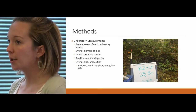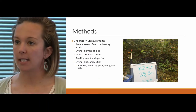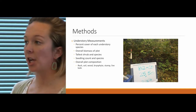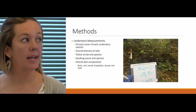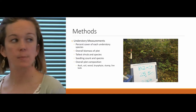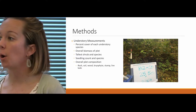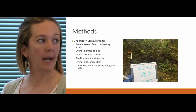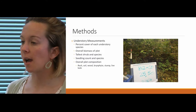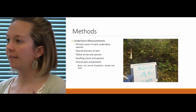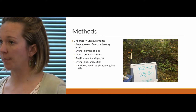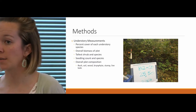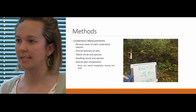In the 2016 field season, I collected all understory measurements with my crew. That included collecting percent cover of each understory species present, the overall biomass of the plots, the tallest shrub and its corresponding species, a seedling count and its corresponding species, and an overall plot composition broken down into categories including rock, soil, wood, bryophyte, stump, and live bowl. All understory plots are three by three meters. In any given larger measurement plot — and there are 40 of these — there are 15 or 16 understory plots, so we're talking 600-plus understory plots, giving us a very robust data set.